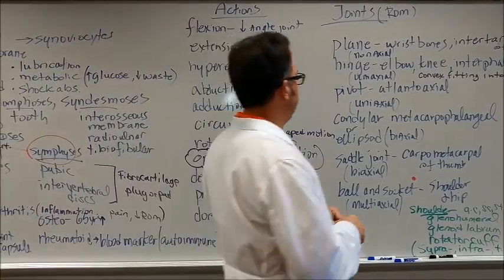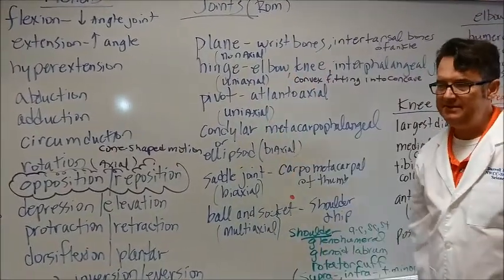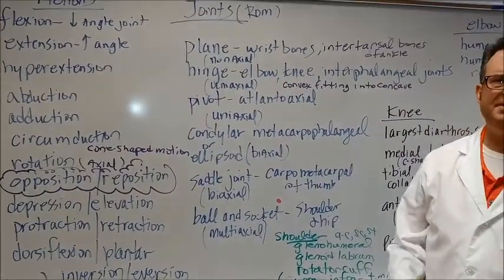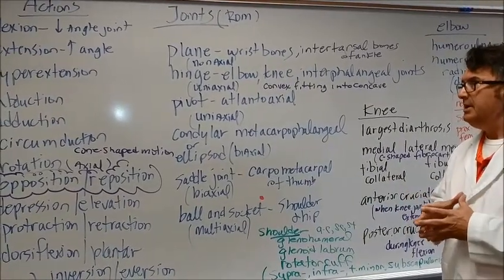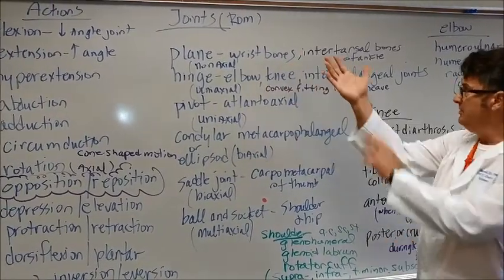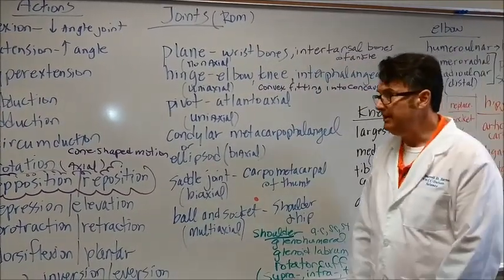Let's talk about different kinds of joints. Plane joints are non-axial, and this basically just means that they move from side to side. They're gliding joints. These are found in the wrist bones and in the intertarsal bones of the ankle, in your ankle area.